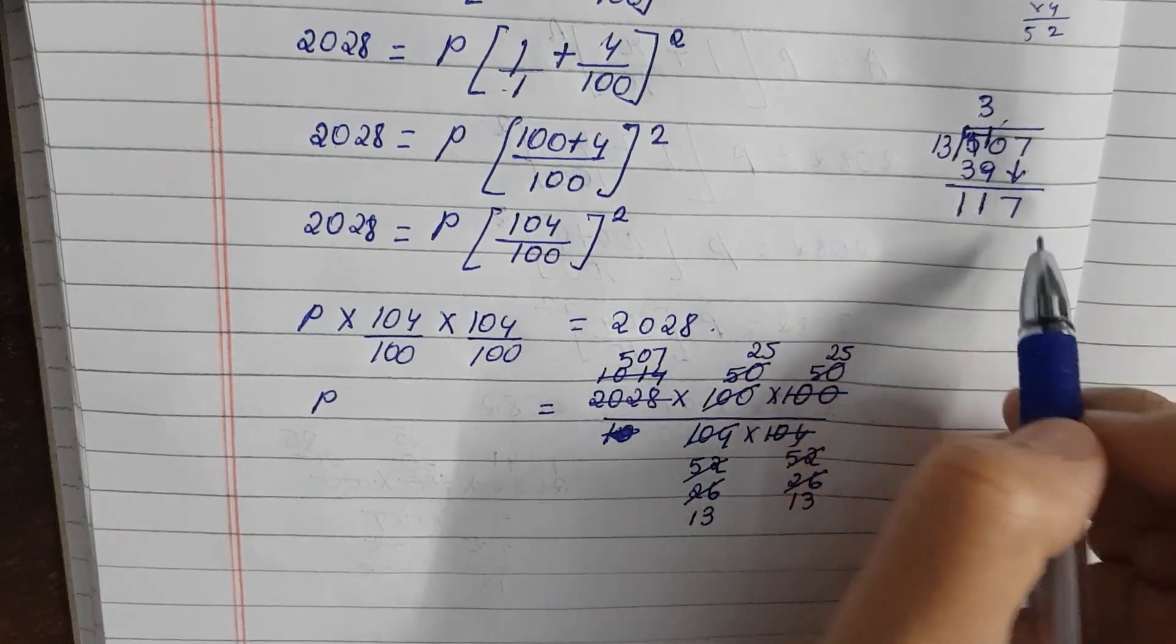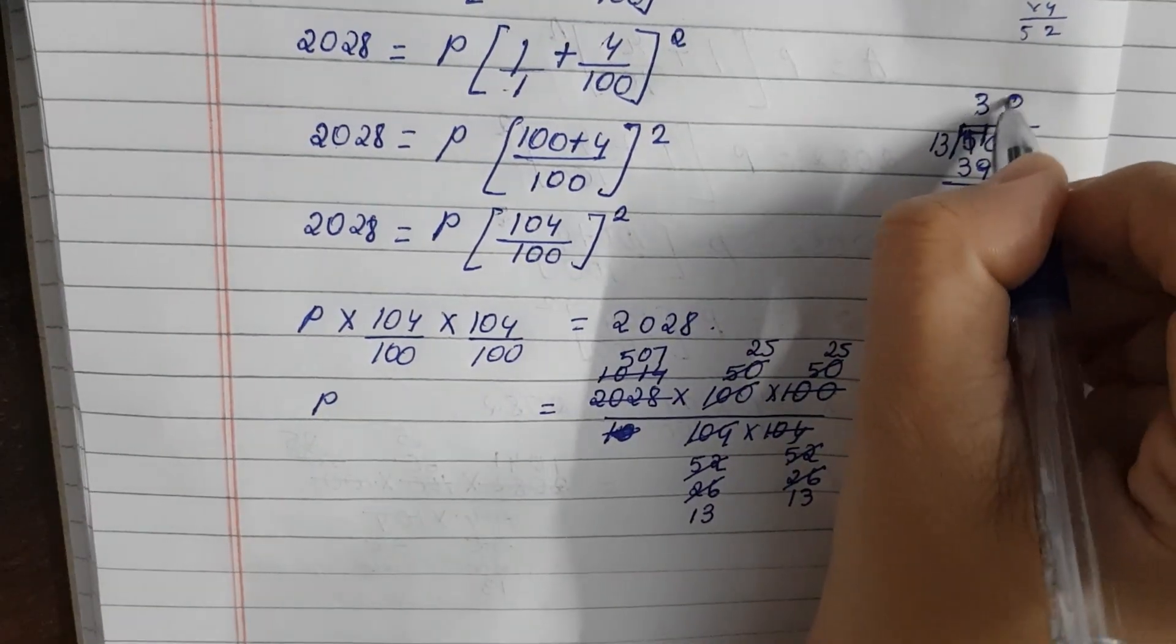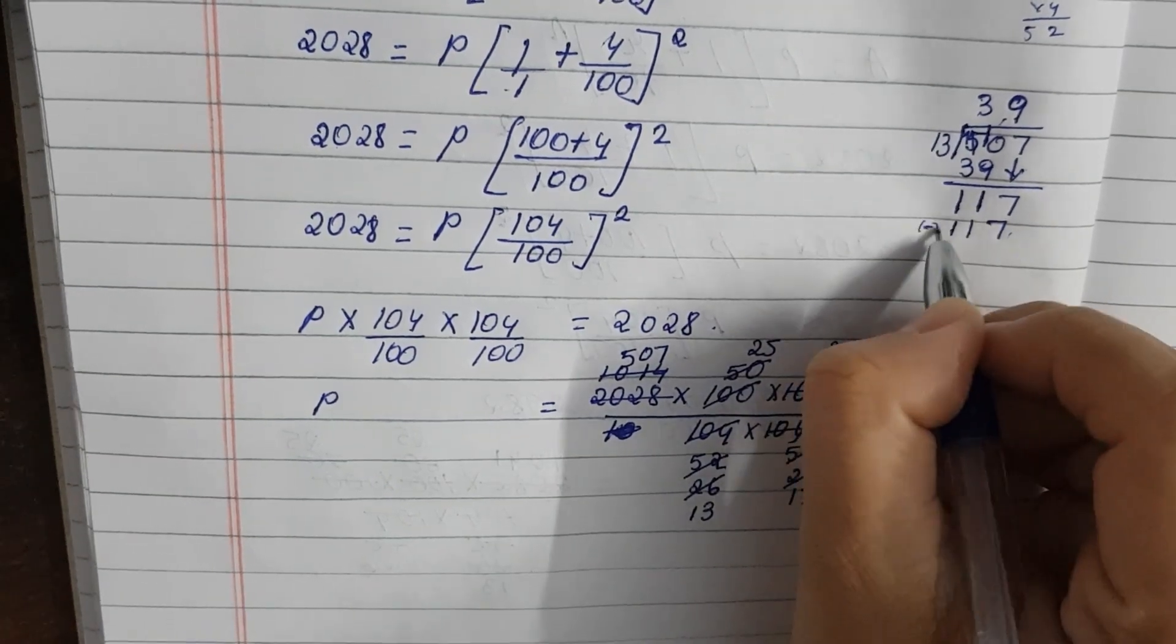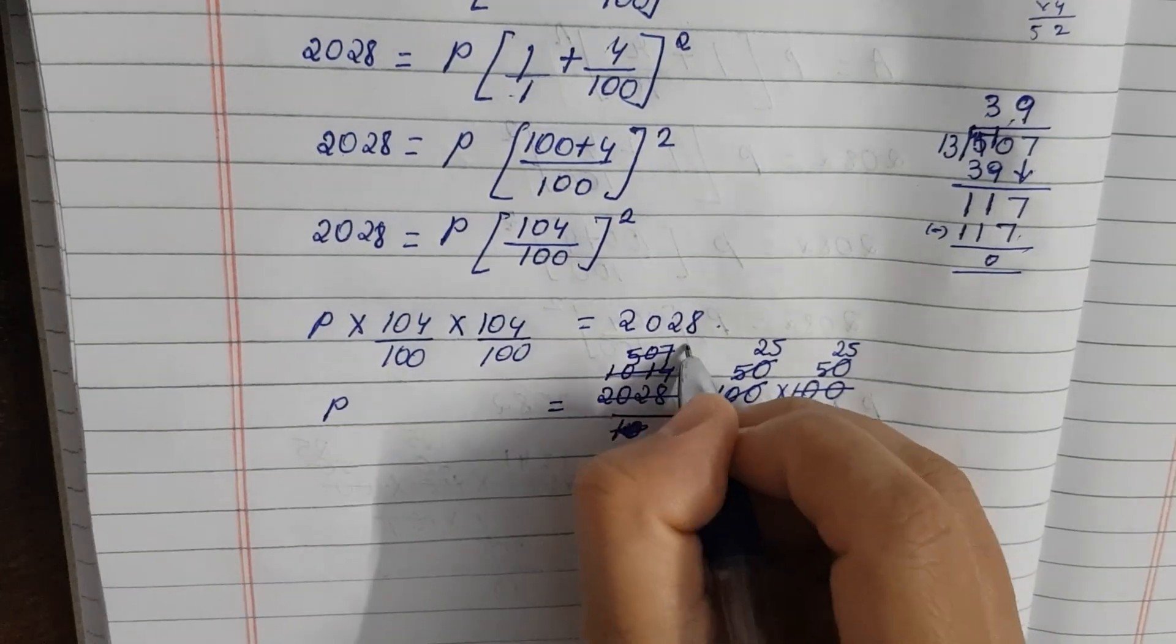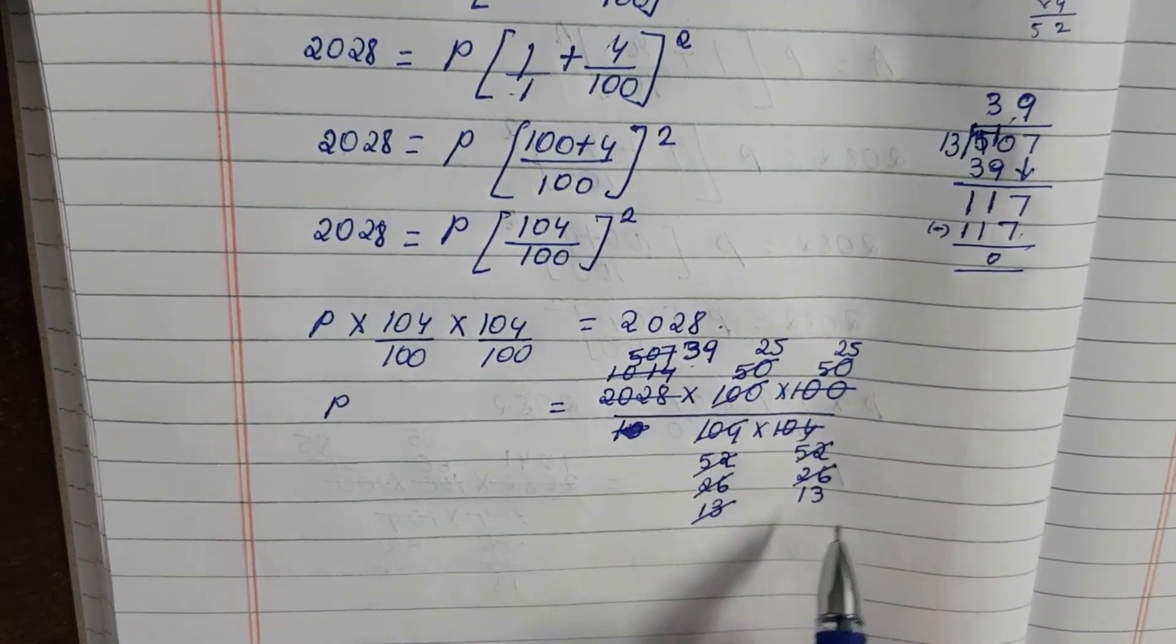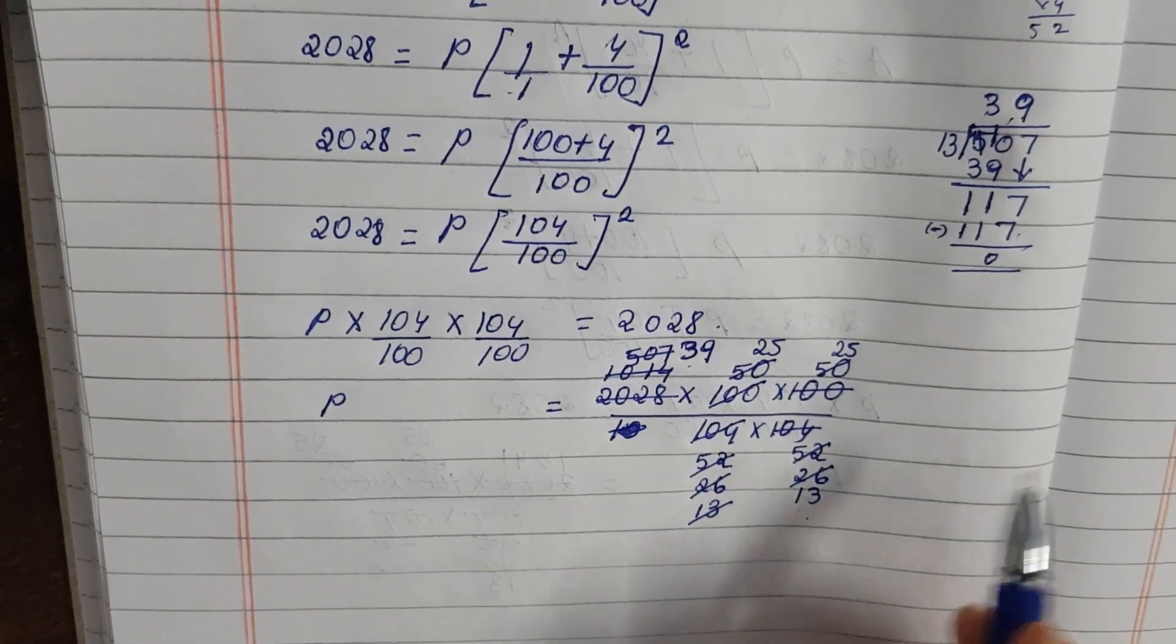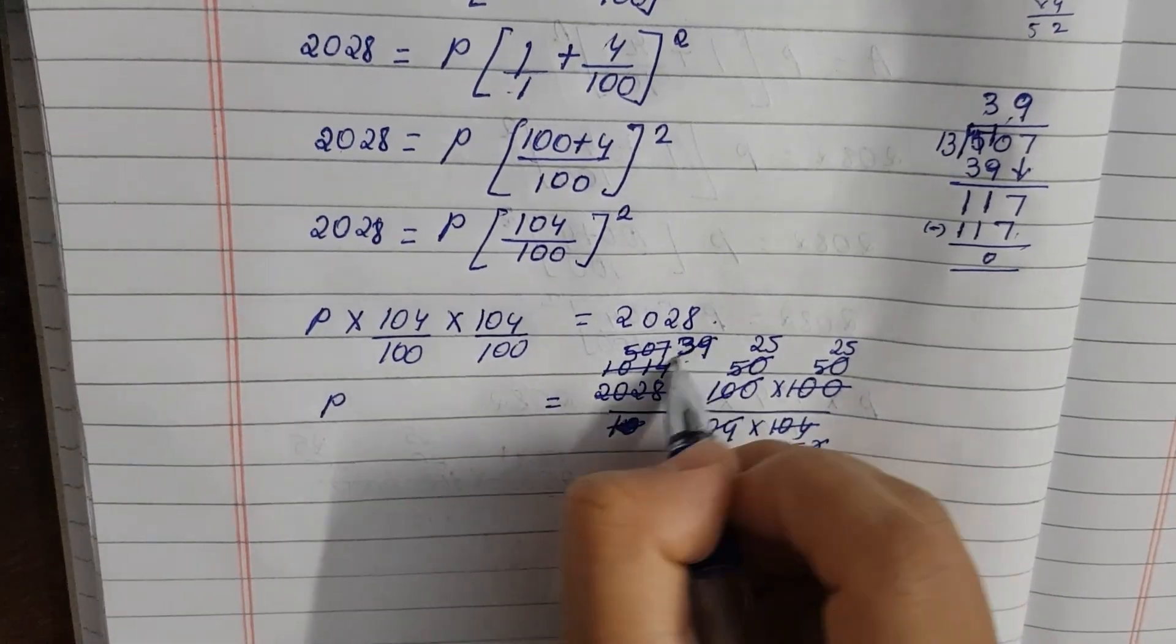So 9 times we multiply here. So 9, 3 is 27, 7, 2 carry up. 9, 1 is 9, 9 plus 2 is 11. So 9 times. So 9, 13 is 117. So cancel it. So 13, 507, 39 times. So this will go 3 times.